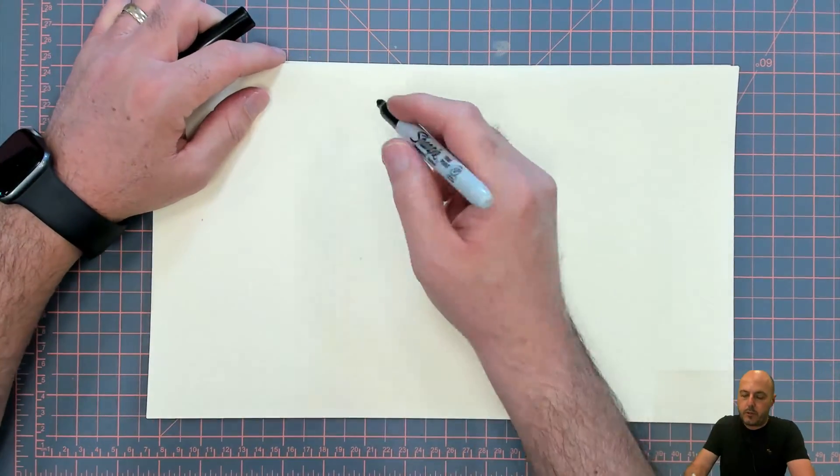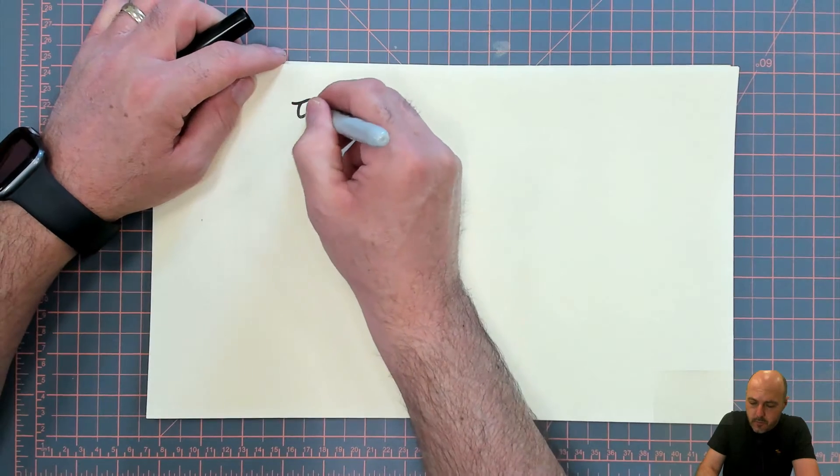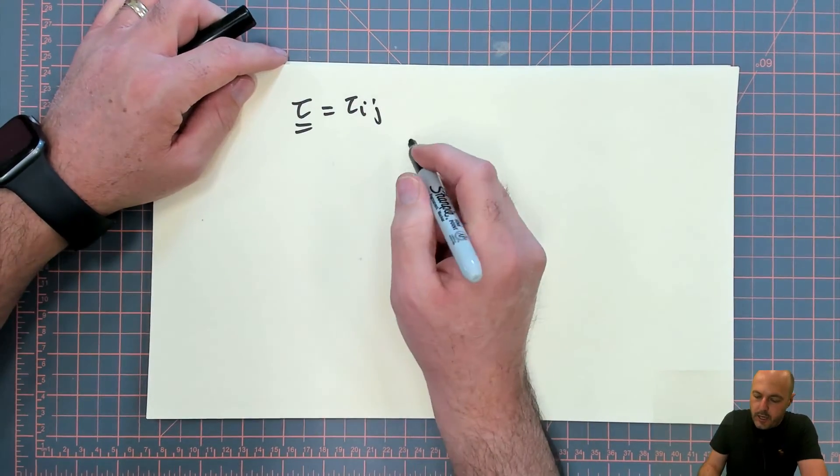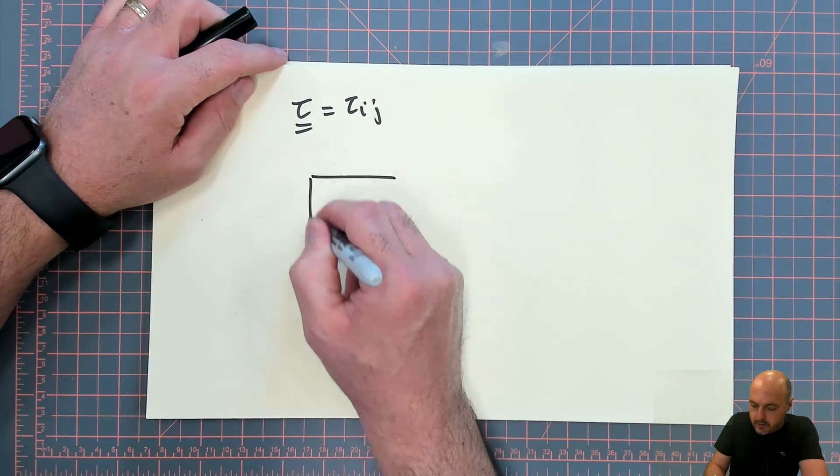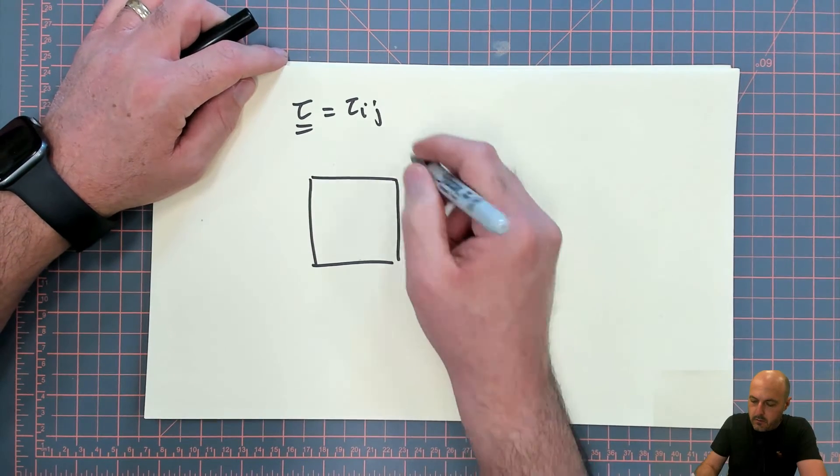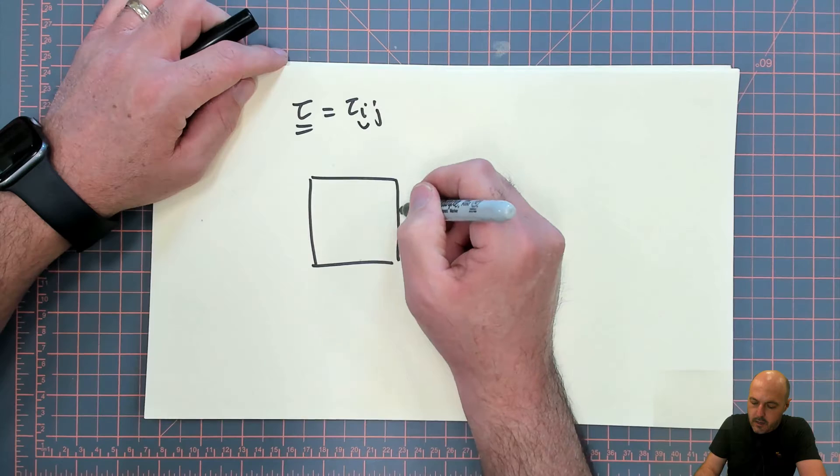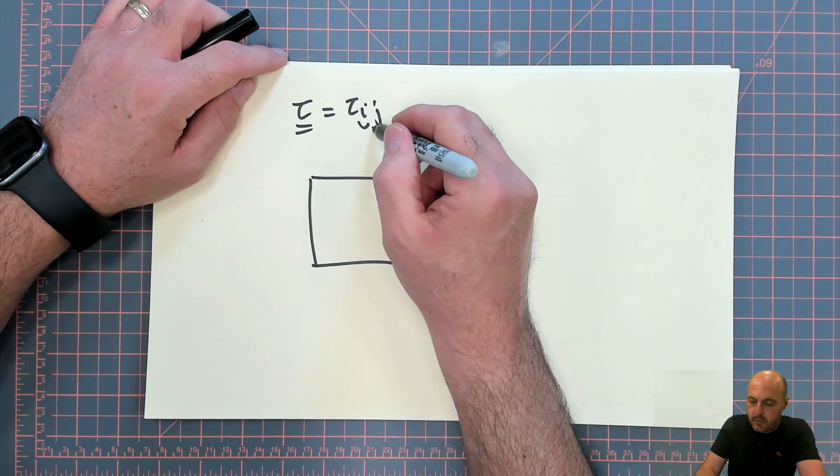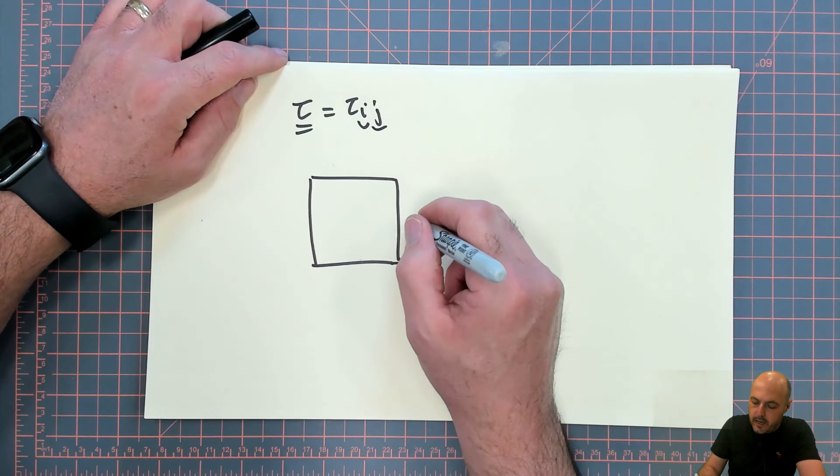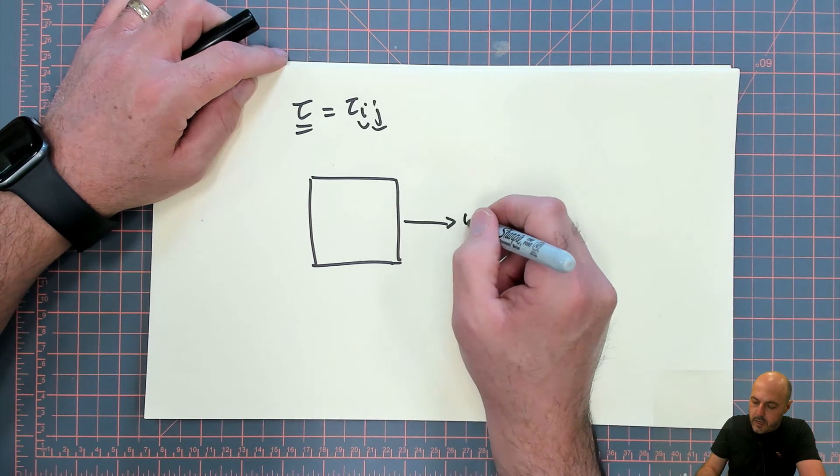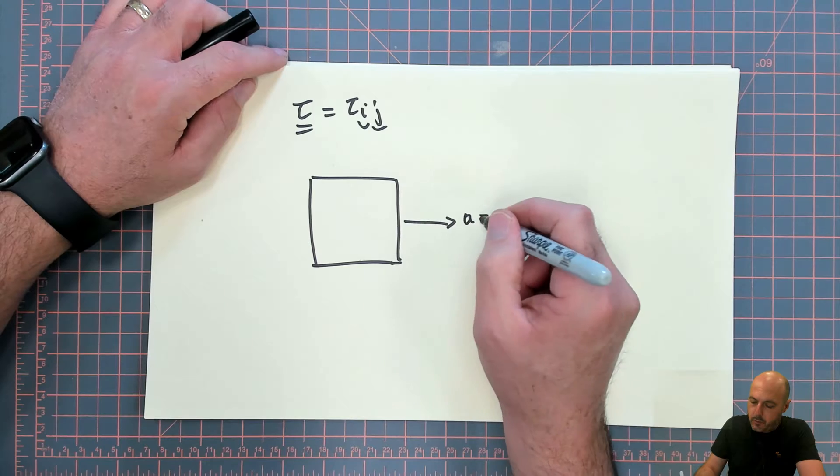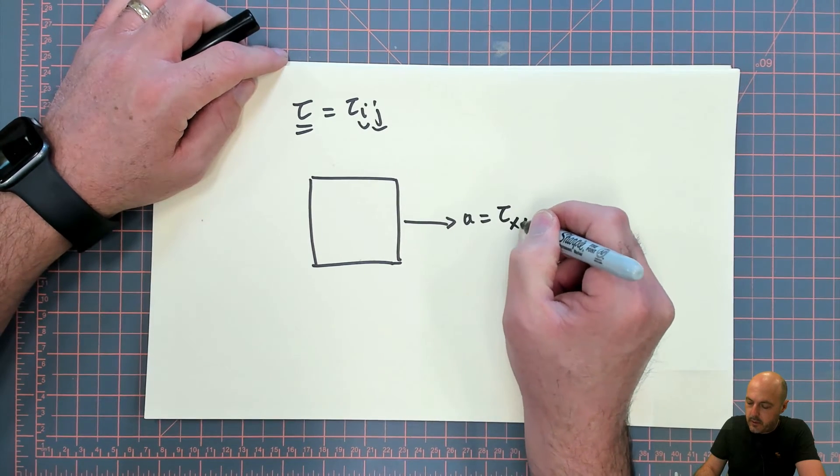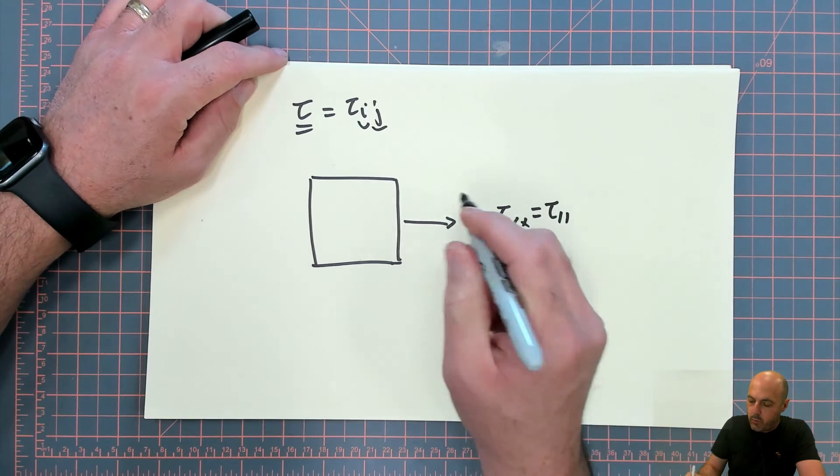If you recall my description of a tensor tau, say is equal to tau_ij, we describe this as i being the index of the face, so x face or y face, and j being the direction in which the tensor is acting. So this component, for example, would be acting on an x face in the x direction, this would be tau_xx.